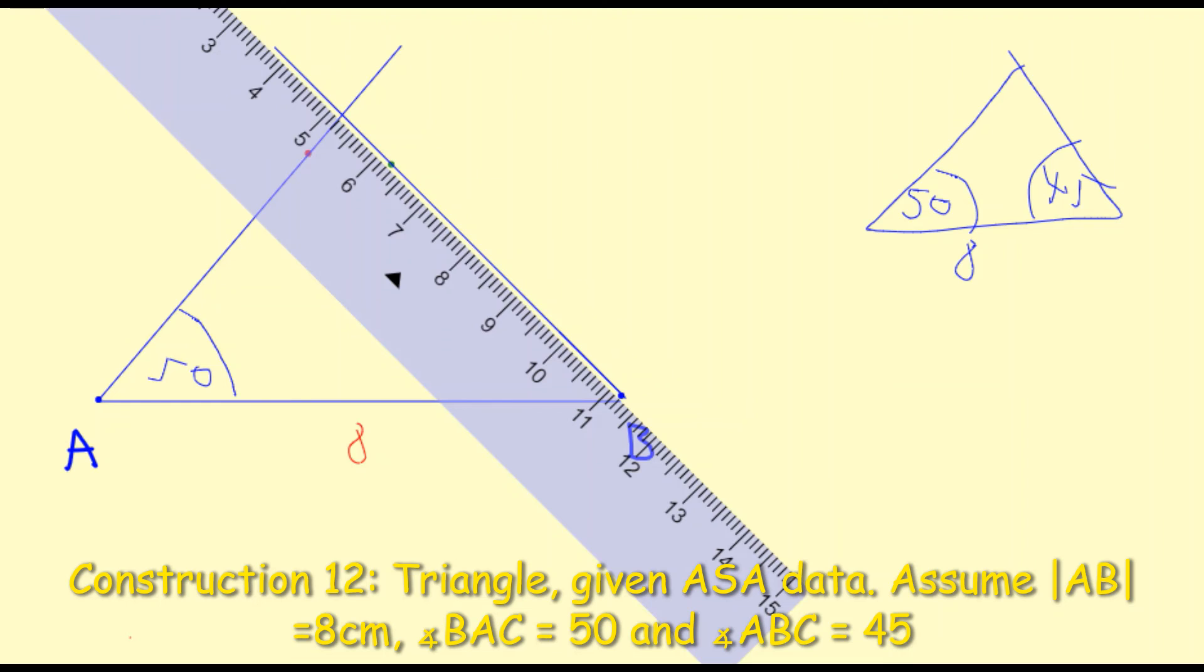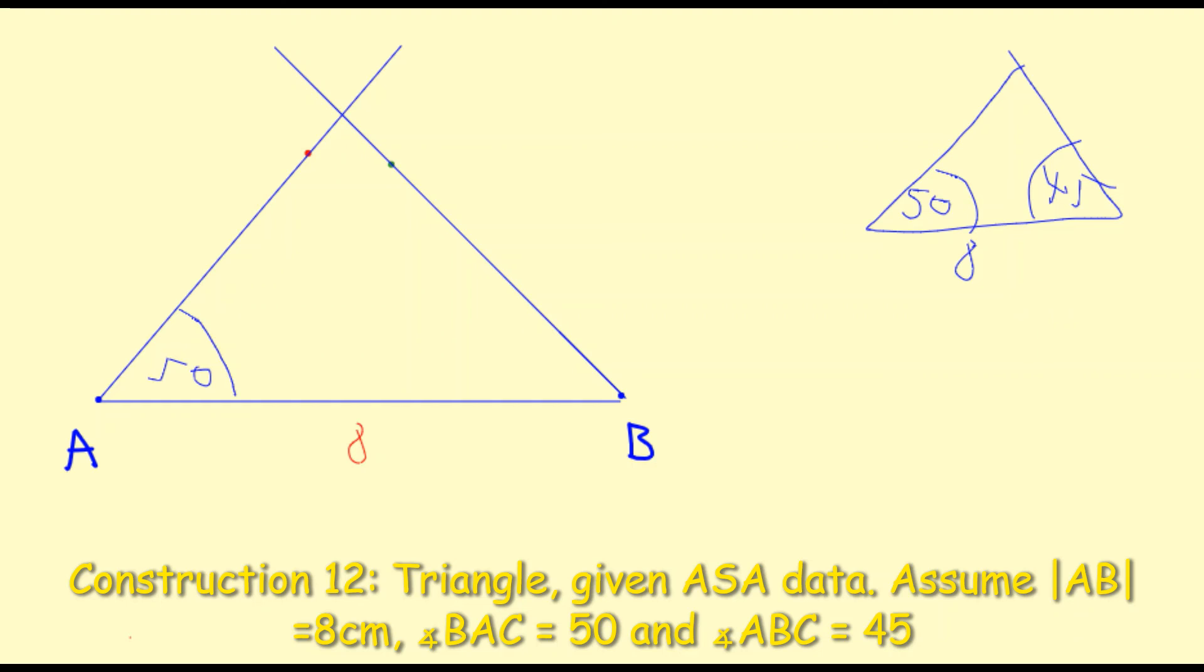Now you can see here that my two lines are now intersecting each other and they're going to intersect at my third and final coordinate which is the point C. I'm just going to mark that point there where those two lines are intersecting at the point C. And I can now finally mark in my second angle here which is 45 degrees.